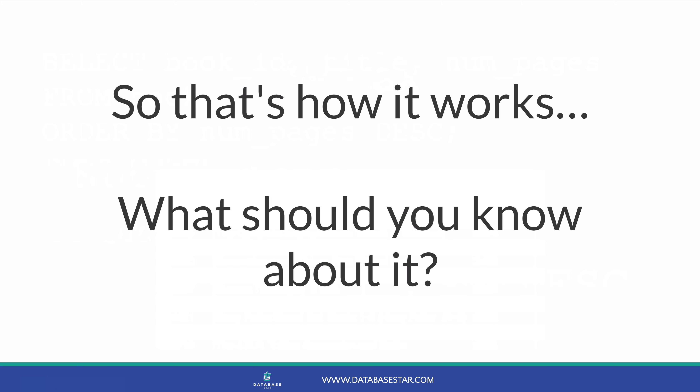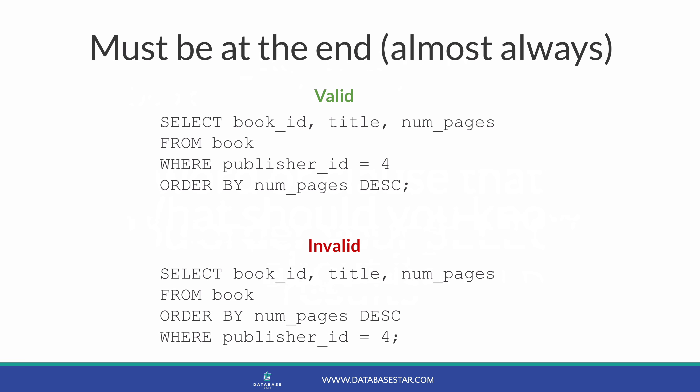The ORDER BY clause must go at the end of the query. It goes after any GROUP BY clauses, after HAVING, and after the FROM and WHERE clauses. If it's not at the end, you'll get an error when you try to run your query. There are a few things that can go after ORDER BY in some situations, such as the LIMIT keyword in MySQL, but in most cases ORDER BY will be the last line in your query.